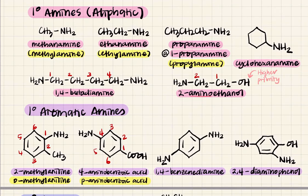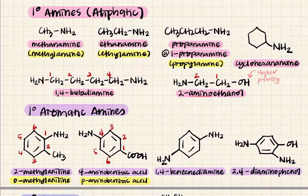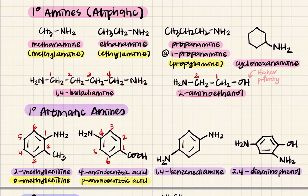If you have two amino groups in your aliphatic compound, it will be a diamine. Count the carbons: 1, 2, 3, 4 — with two amino groups it will be butanediamine, specifically 1,4-butanediamine. You need to include the numbering.